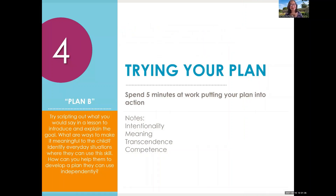Spend five minutes putting your plan into action. Make notes about intentionality, meaning, transcendence, and competence. How would you script this out? If you don't have a child you're working with right now, try scripting what you might say in a lesson to introduce and explain the goal. What are ways to make it meaningful based on the child's age and level of comprehension? What are everyday situations where the child can learn or use this skill? And how are you going to help them develop a plan to use that skill independently?